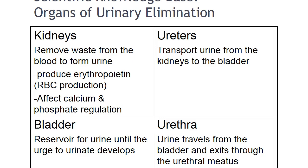In addition to filtering blood and creating urine, the kidneys have other amazing functions. They produce several substances vital to red blood cell production, blood pressure, and bone mineralization. They maintain normal red blood cell volume by producing erythropoietin, which functions within the bone marrow to stimulate red blood cell production and maturation and prolongs the life of mature red blood cells. Patients with chronic kidney conditions cannot produce sufficient erythropoietin and are therefore highly prone to anemia.